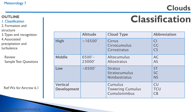Then we have our vertical development clouds: cumulus, towering cumulus, cumulonimbus. Anything with cumulo is going to be a vertical development cloud and it can start at any altitude — it's not in a layer, it goes through all of them. For example, a cumulonimbus could start at 3,000 feet but go all the way up to 40,000 feet, passing through all the different height demarcations.